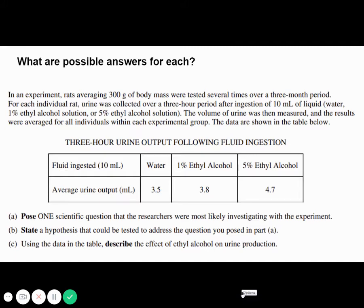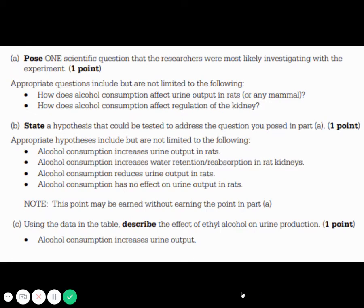So try to think about what possible answers could be for each of these. So you should have come up with a scientific question. Some people may have a hard time between what's a question, what's a hypothesis. The question is just the general statement of what the thing's looking for. Possible questions: how does alcohol consumption affect urine output? That was a really common one to see.